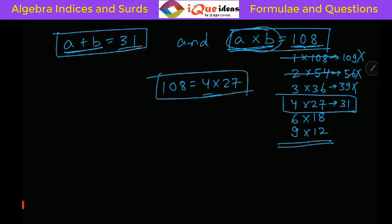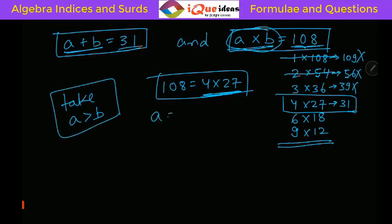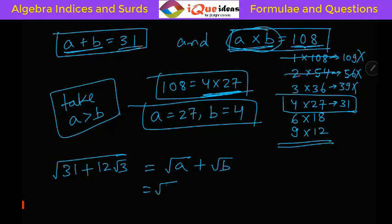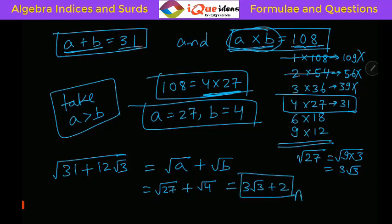Now, which is a and which is b? Always take a as the larger value. So a = 27 and b = 4. Our answer is √a + √b = √27 + √4. Now √27 = √(9×3) = 3√3, and √4 = 2. So the answer is 3√3 + 2.